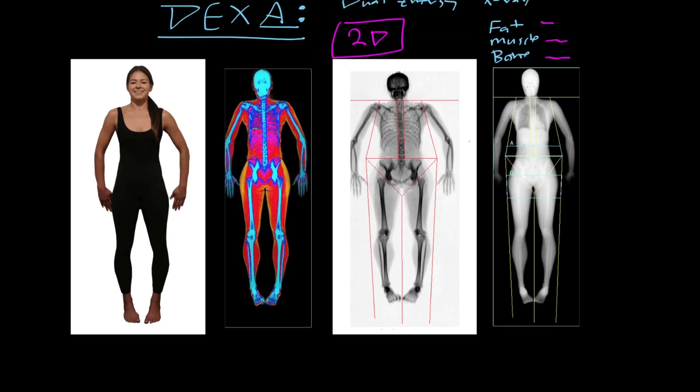You can get a summary of, in a particular area of the body, like right here at the head of the femur, in this area, what's the density of the bone? What's the body fat content? What's the muscle content?